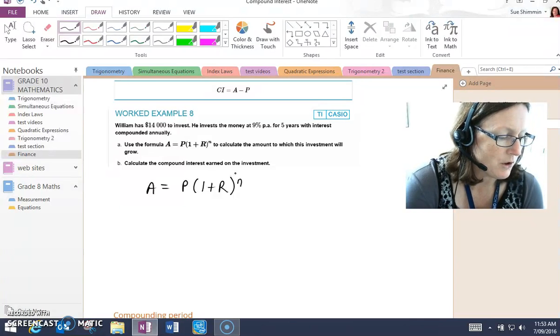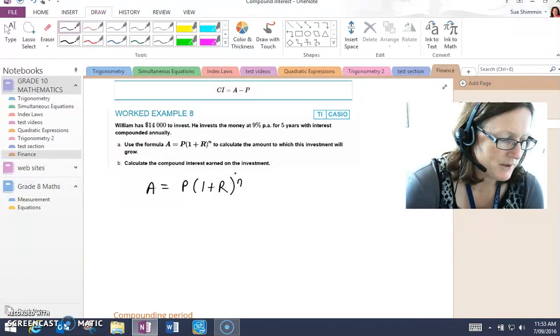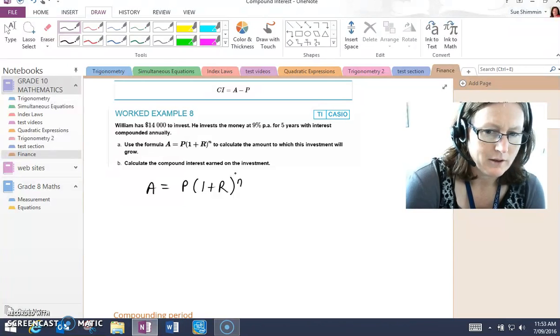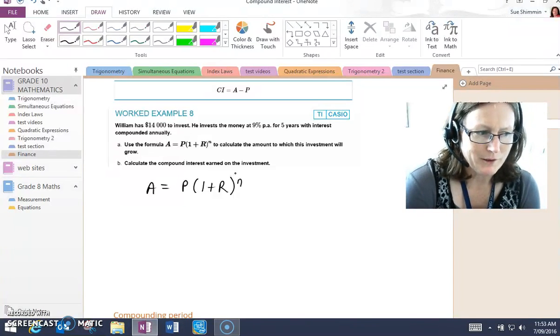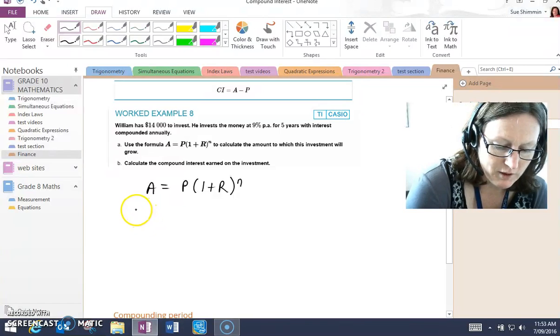R is the interest rate per compounding period expressed as a decimal number. Let's see how that gets put into place.